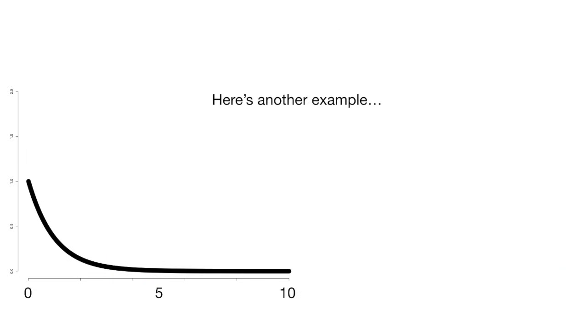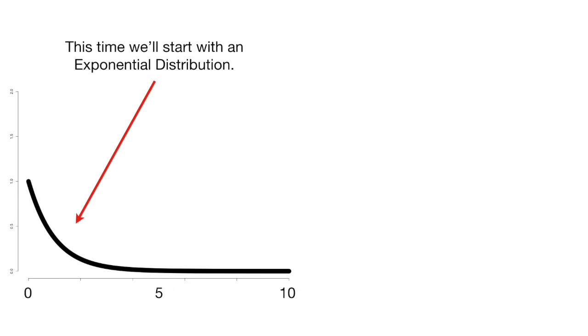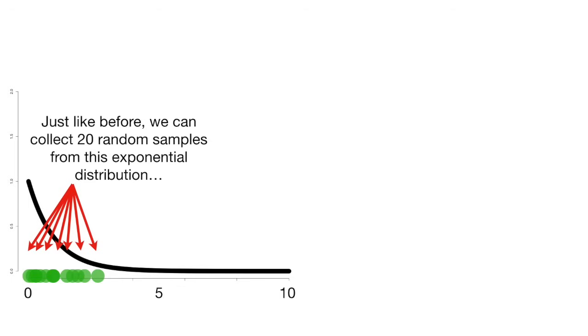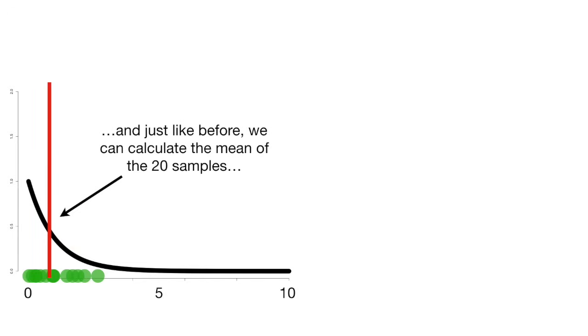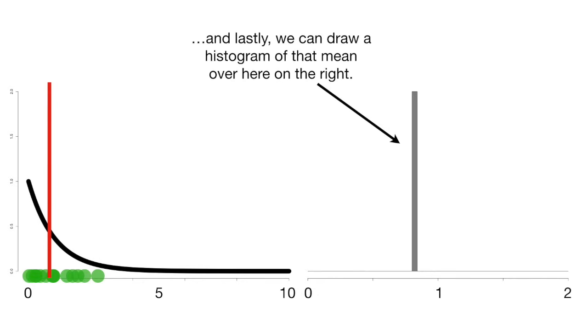Here's another example. This time, we'll start with an exponential distribution. Just like before, we can collect 20 random samples from this exponential distribution. And just like before, we can calculate the mean of the 20 samples. And lastly, we can draw a histogram of that mean over here on the right.